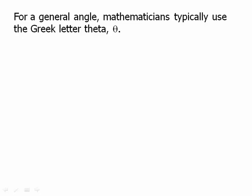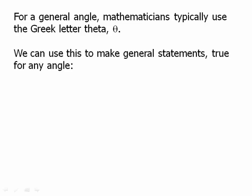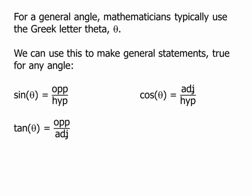In general, for a general angle, mathematicians typically use the Greek letter theta. We can use this to make general statements true for any angle. So the sine of theta is opposite over hypotenuse. The cosine is adjacent over hypotenuse. And the tangent is opposite over adjacent. And this is the basic SOHCAHTOA pattern.